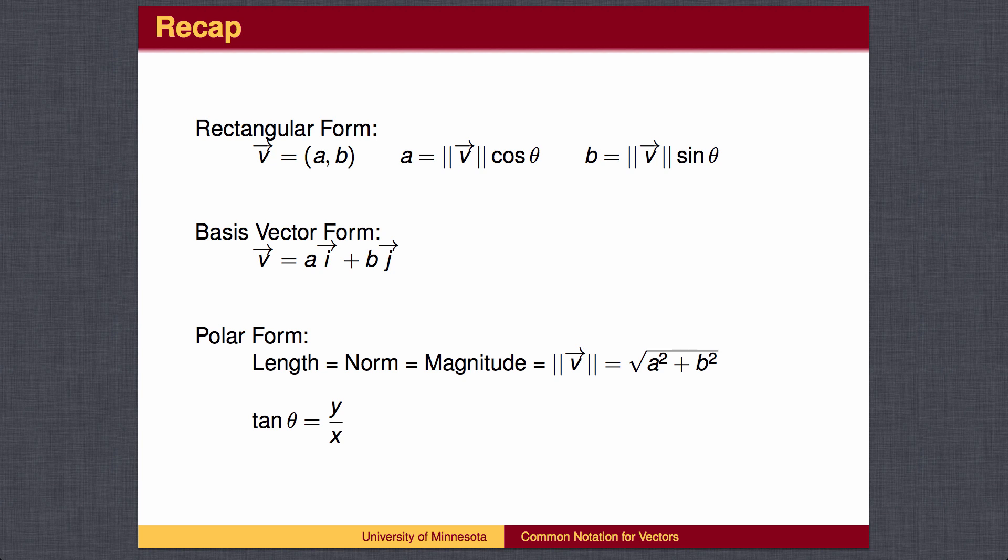To recap, the cosine and sine functions allow us to convert from polar form to rectangular form. The Pythagorean theorem and the inverse tangent function allow us to convert in the other direction. The rectangular form can also be written as the linear combination of i and j, which are vectors of length 1 along the x and y-axis respectively.